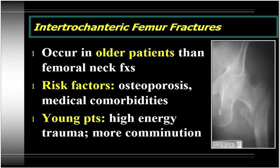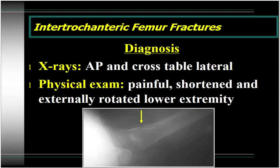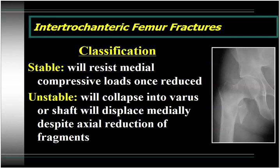Intertrochanteric fractures occur in older patients than femoral neck fractures, and typically these patients are older and sicker with more medical comorbidities, with risk factors of osteoporosis as well as medical issues. In young patients, intertrochanteric fractures result from high-energy trauma and typically present with more comminution. Diagnosis requires AP pelvis x-ray and cross-table lateral. On physical examination you'll see a painful, shortened, and externally rotated lower extremity. The classification for intertrochanteric fractures is clinically into stable versus unstable. Stable fractures are those that will resist medial compressive load once reduced. Unstable fractures will collapse into varus or the shaft will displace medially despite good axial reduction.